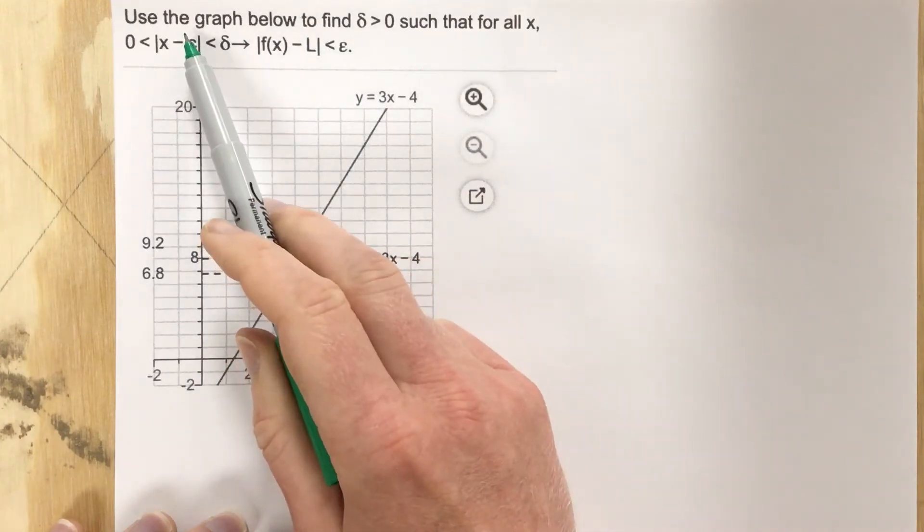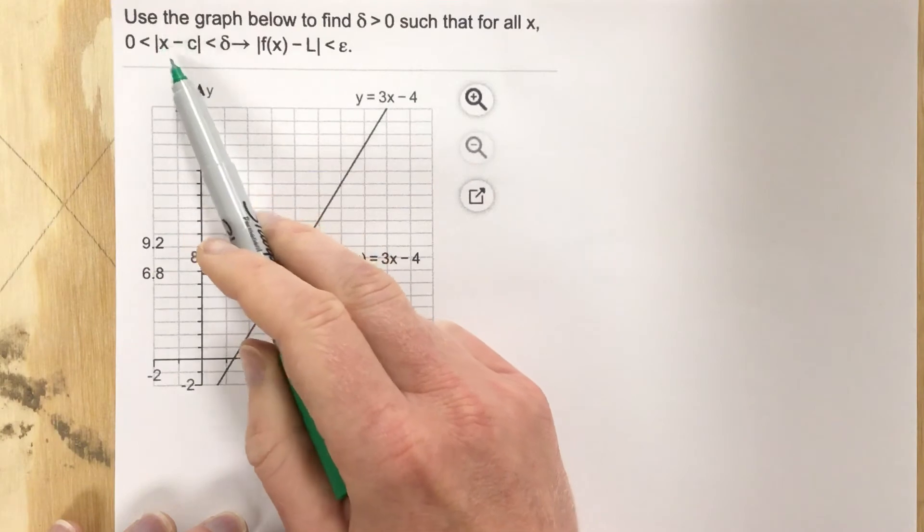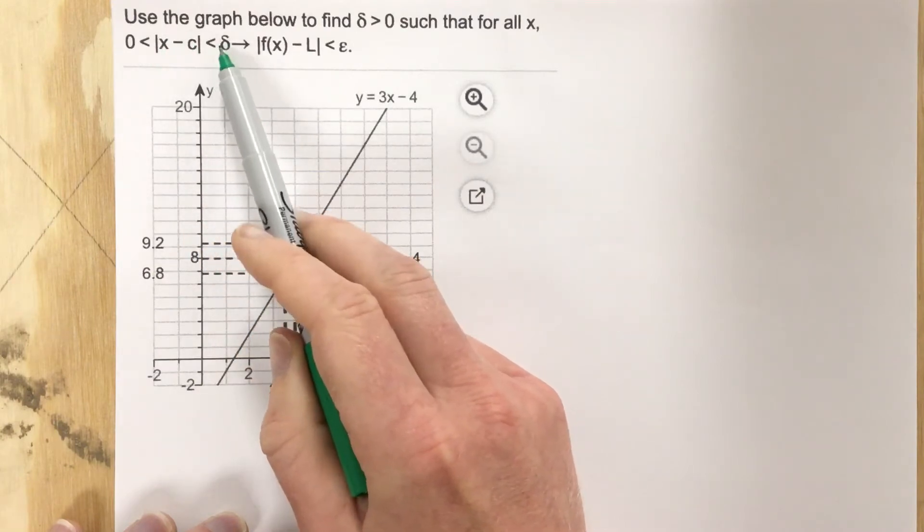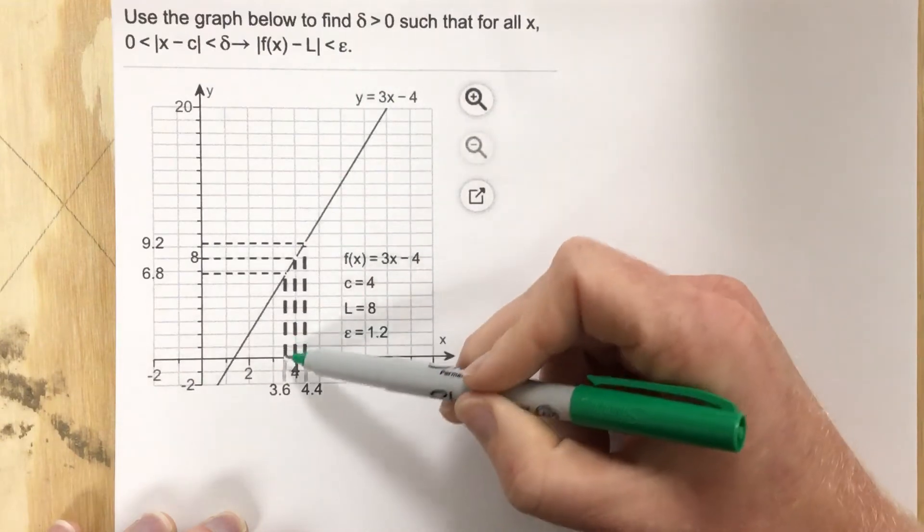We want to find the delta such that our x values fall inside of delta, which makes our y values fall inside of epsilon. You can see that picture here.